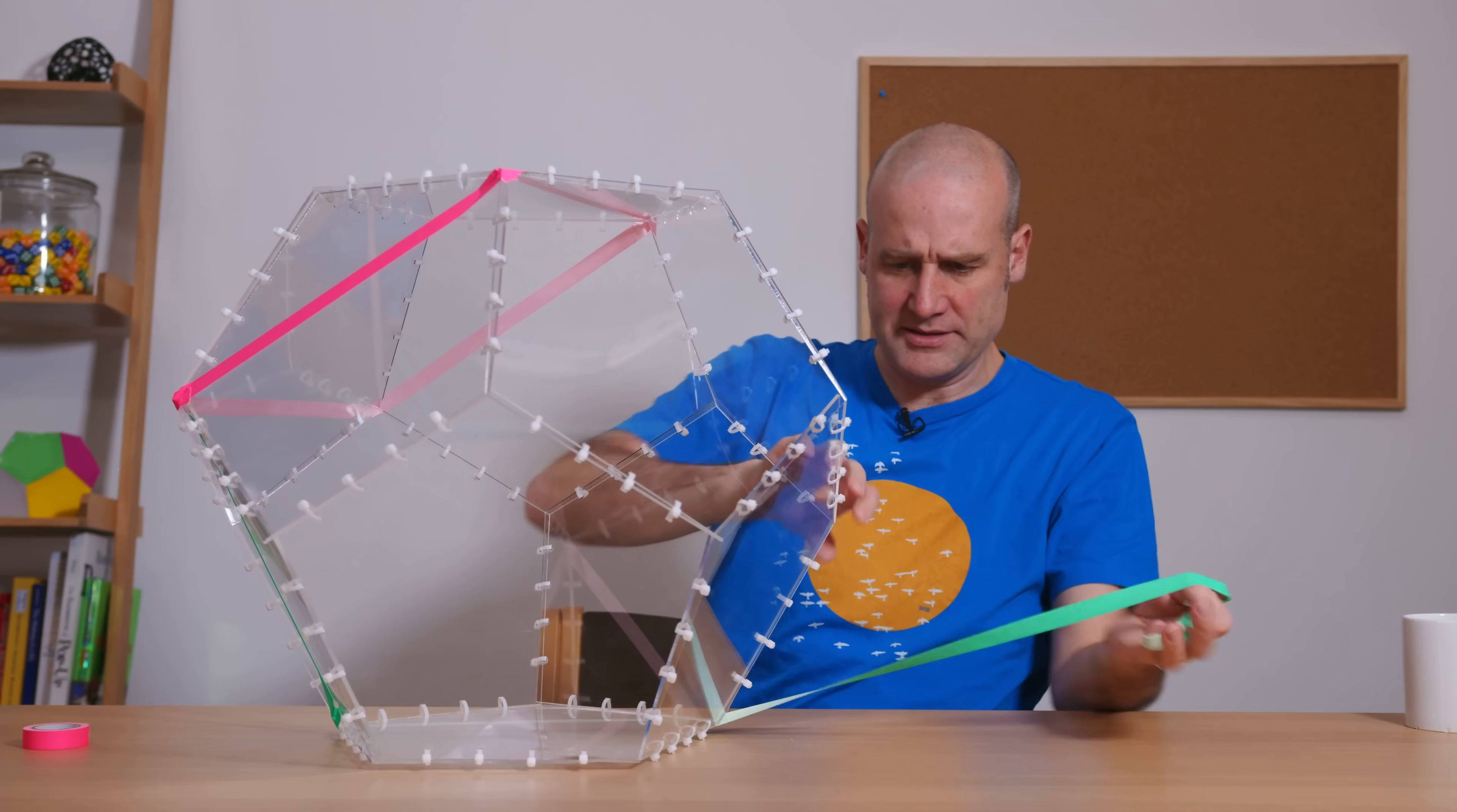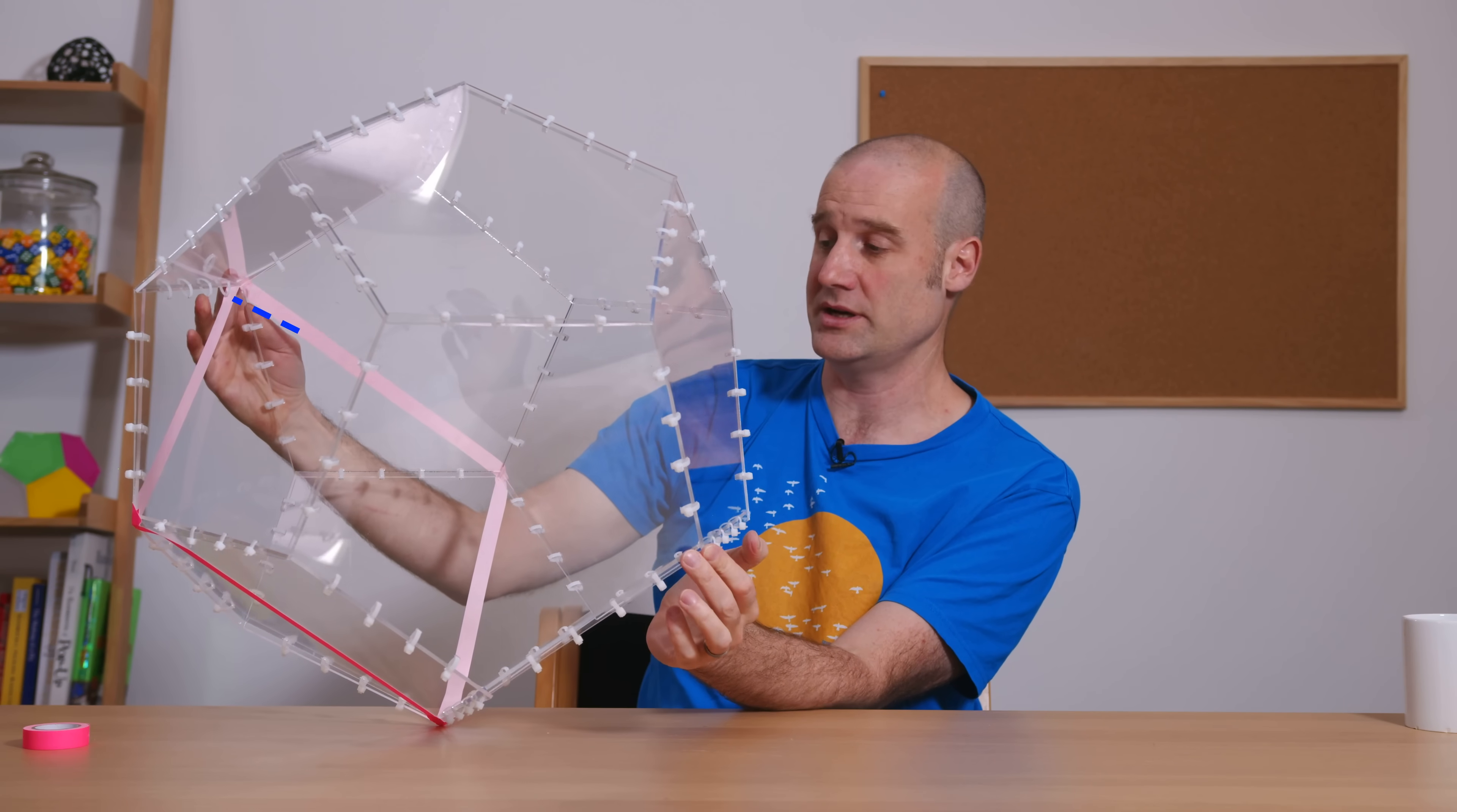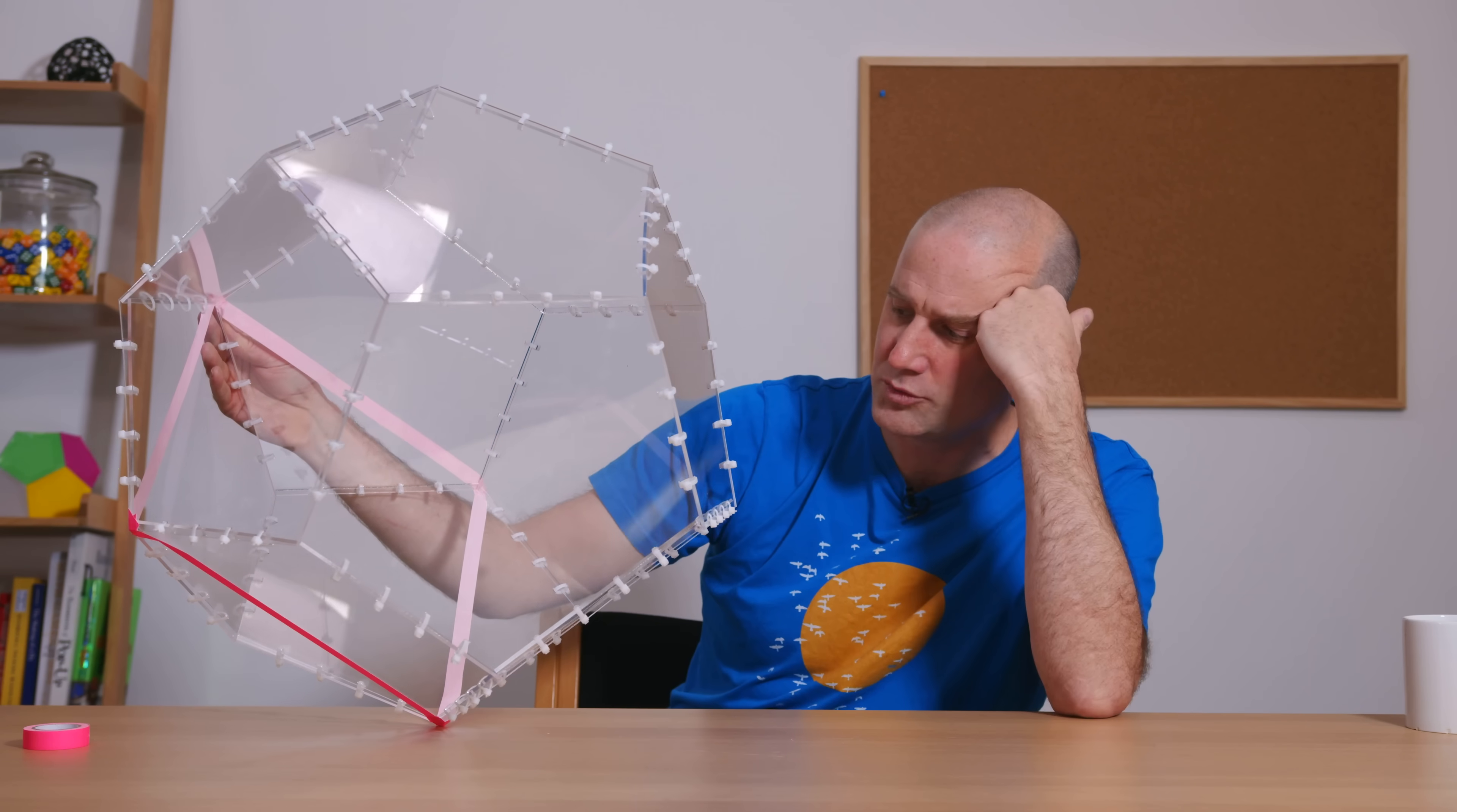But don't get too complacent because our final space diagonal, the longest one in a regular dodecahedron, which goes all the way from one corner like the vertex up here to the most distant one over here, that is the golden ratio times root 3. It's the cube. It's the cube ratio.